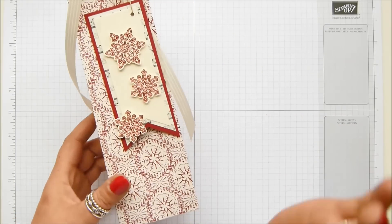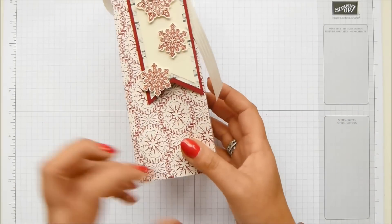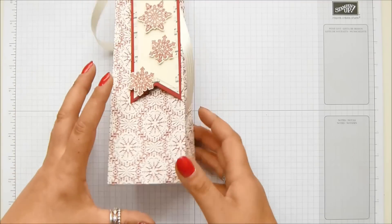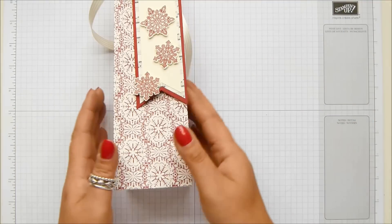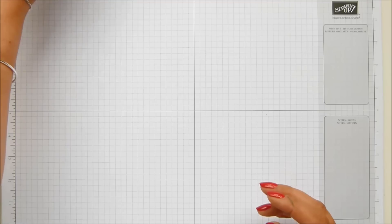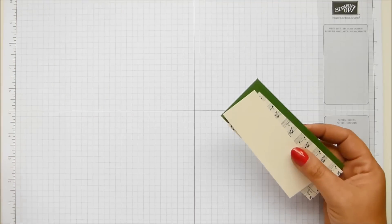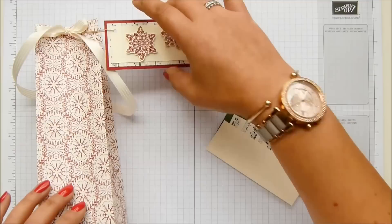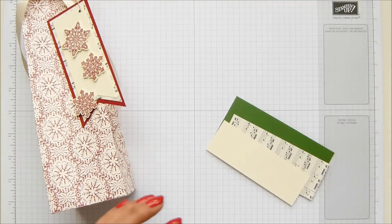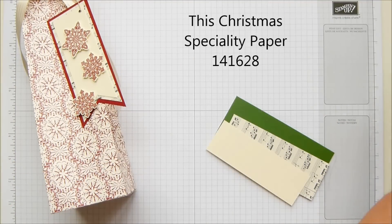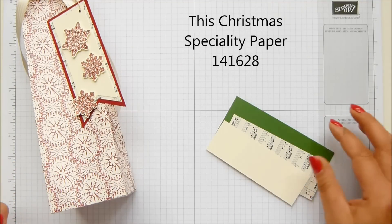I'm going to make the tag first and then do the box afterwards because I need a big desk area that I haven't really got when I've got all my supplies out. So the tag, it's a cutie. I love the Christmas paper that's in our catalogue. Oh, the name of it's fallen out of my head. What's it called?